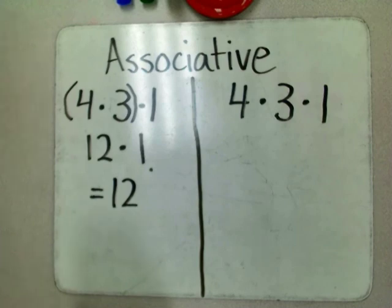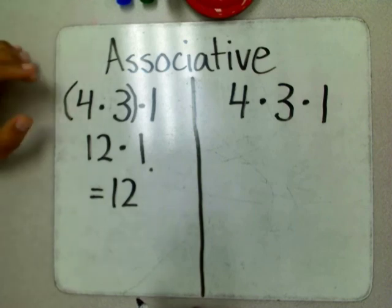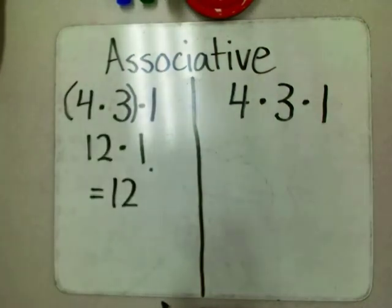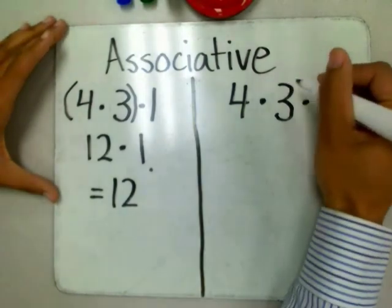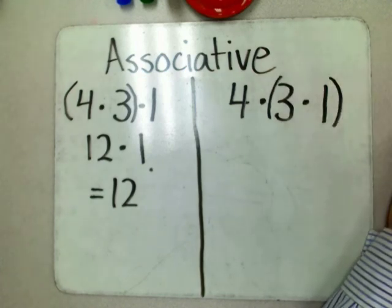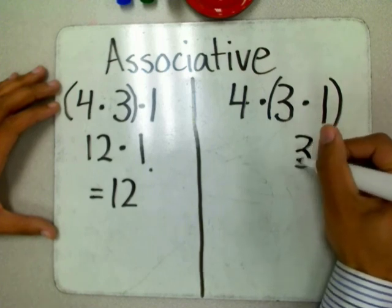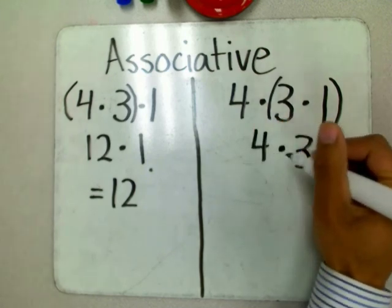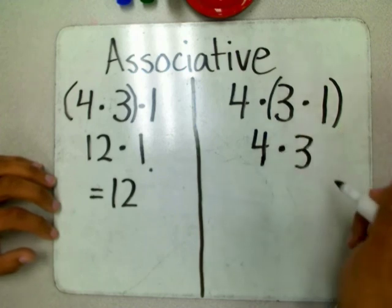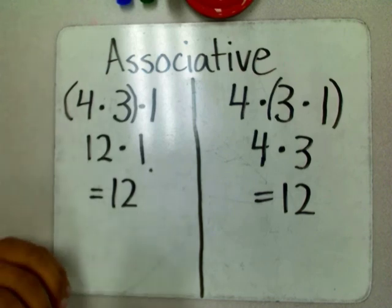The associative property of multiplication is also really simple. It says we'll still come up with the same product even if we multiply our factors in a different order. Here we multiplied from left to right, but on this one, let's multiply from right to left. We have parentheses around three and one because we're going to multiply those first. According to order of operations, we take care of what's inside the parentheses first. So one times three, or three times one, is equal to three. We have one more factor to multiply by, and that's four. Four times three is equal to twelve. So according to the associative property of multiplication, you can multiply factors in any order and still come up with the same product.